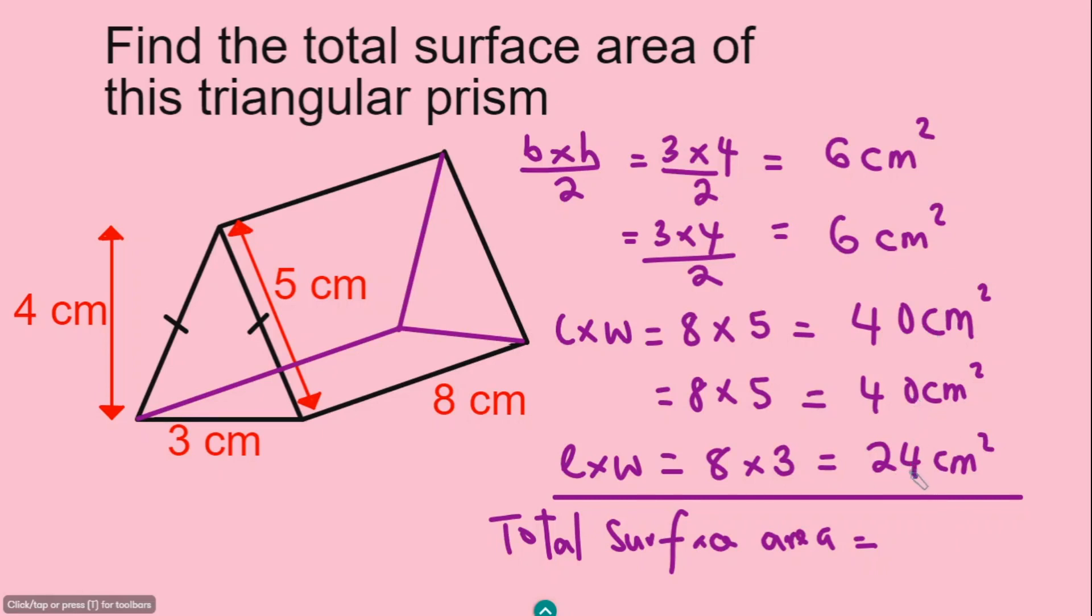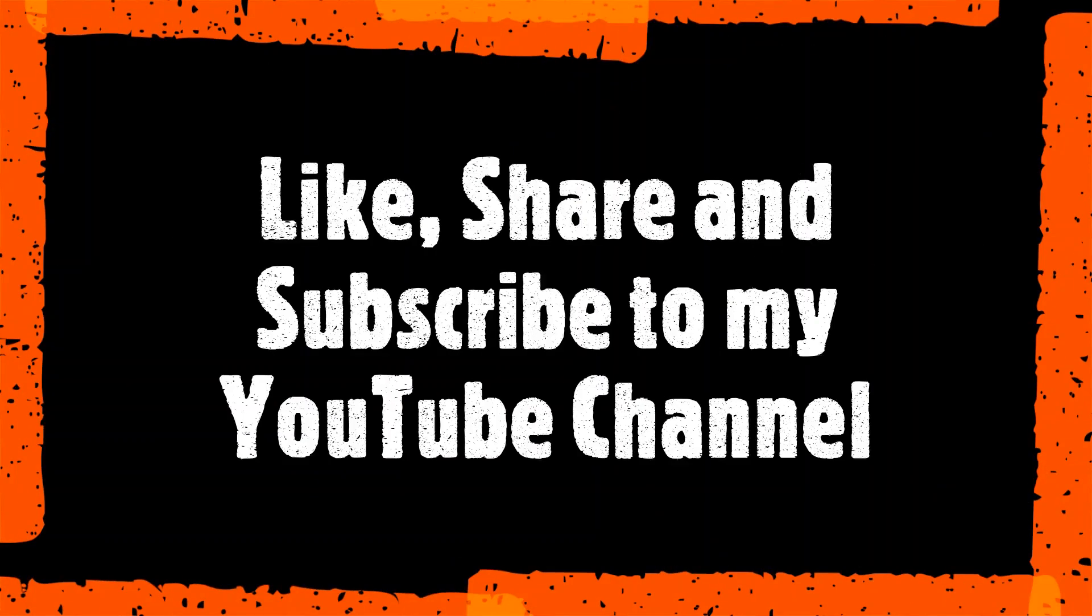40, and 24 cm squared. If you add them up, you're going to have 116 cm squared. This gives you the whole total surface area of this shape.